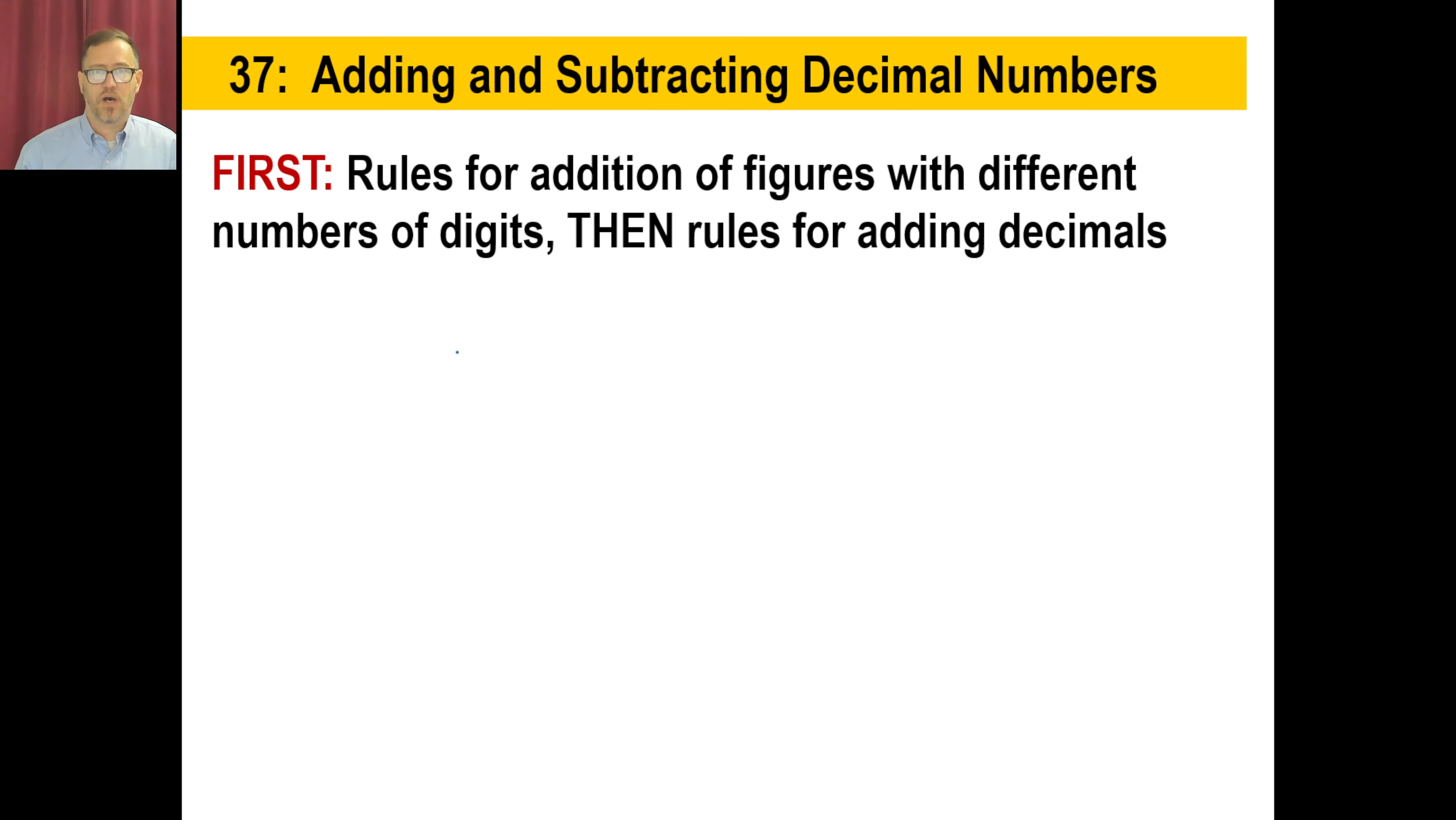First off, if you see 324 plus 91 plus 1085 or something like that, you know the rule is when you add these together, you don't just go 324 plus 91 plus 1000. What you need to do is line these up according to what their digits are.